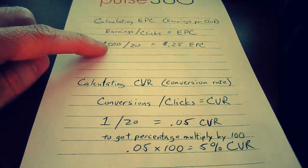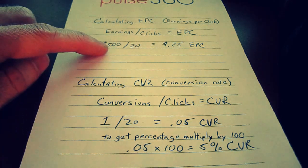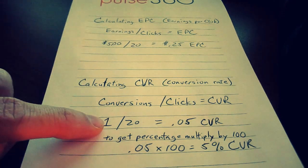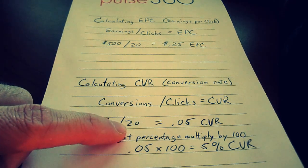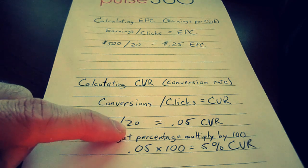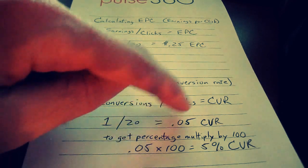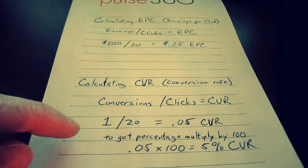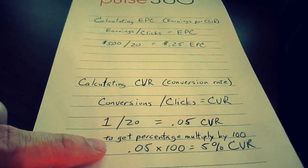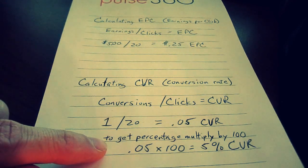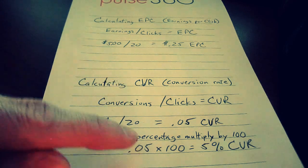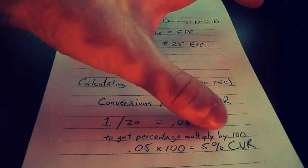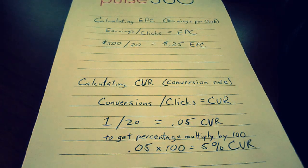So let's say we go to our one $5 conversion — we have one conversion divided by the 20 clicks it took to get that conversion, equals .05 CVR. If you want to get percentage, you multiply that by 100, and .05 times 100 is 5% conversion rate.